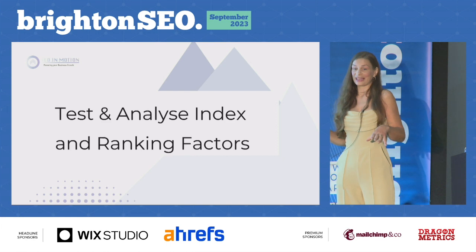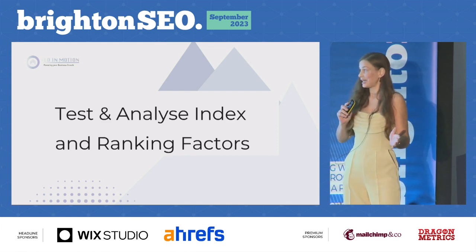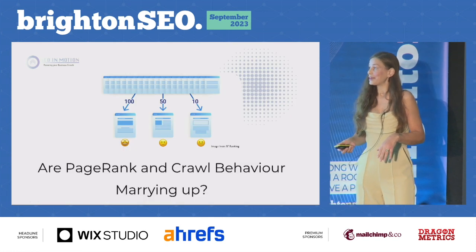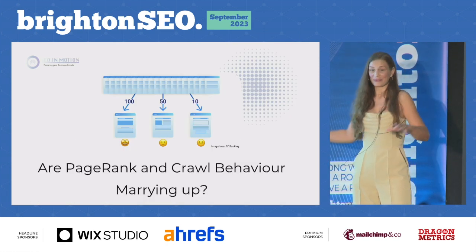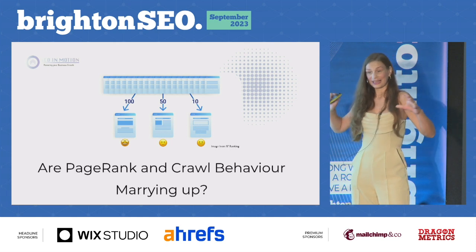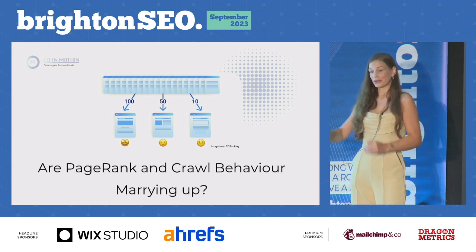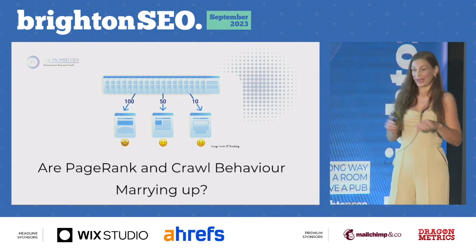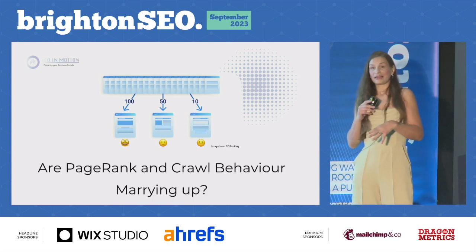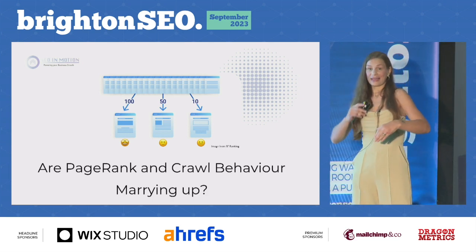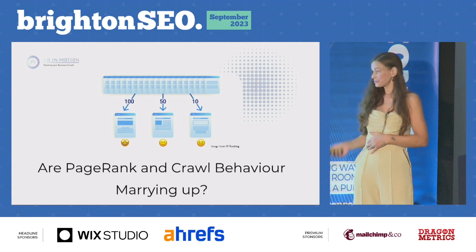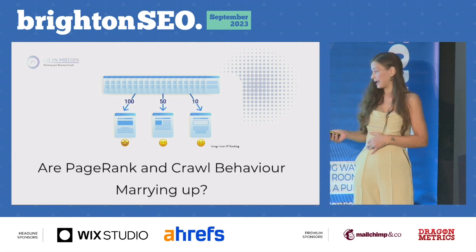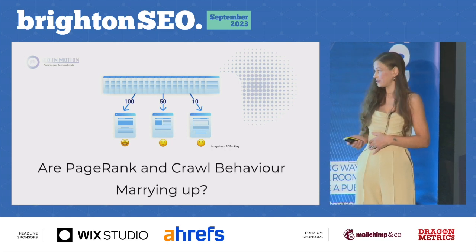You can also use log file analysis to test and analyze what works in your niche. One way to do this is if you've got an idea of where PageRank — that link juice — is on your site and it doesn't match up with what Google's crawling. Not all backlinks are created equal; not all backlinks are actually going to play a part in getting your content ranked. You can find out what backlinks are working and what content they're helping get crawled.